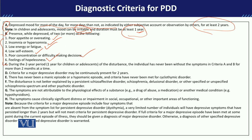The sixth symptom is feelings of hopelessness — this feeling is very prominent, and the child feels that nothing good will ever happen in the future, nothing can get better. Criteria C states that during the two-year period for adults or one-year period for children, Criteria A and B symptoms must not be absent for more than two months at a time. The symptoms must be continuously present.